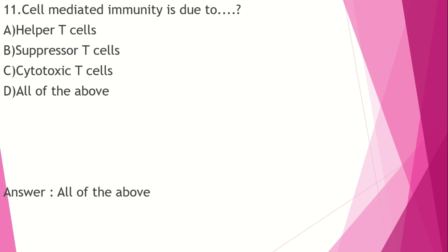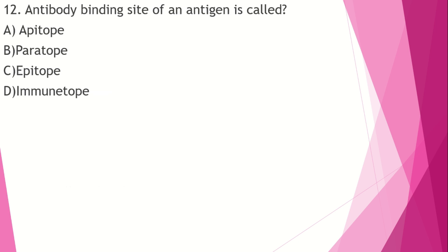Helper T-cells and suppressor T-cells are involved in cell-mediated immunity against bacteria-infected cells. Humoral immunity involves B-lymphocytes. The antibody binding site of an antigen is called the epitope. The antigen binding site of an antibody is called the paratope. Epitope is the smallest determinant of antigenicity.